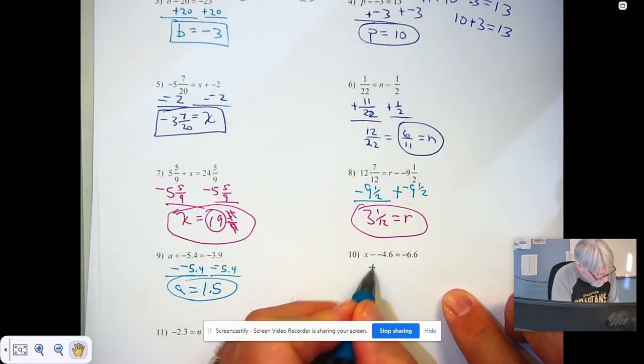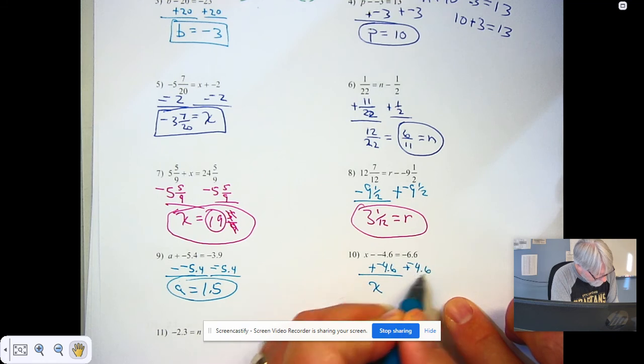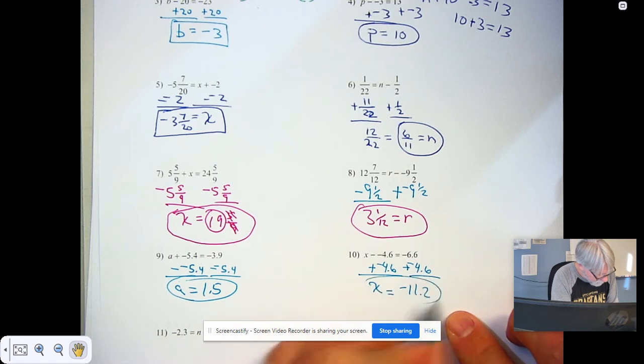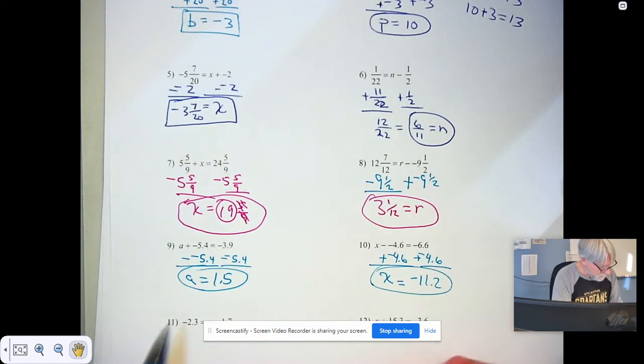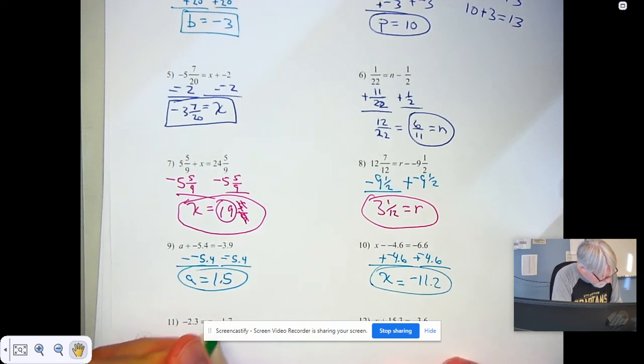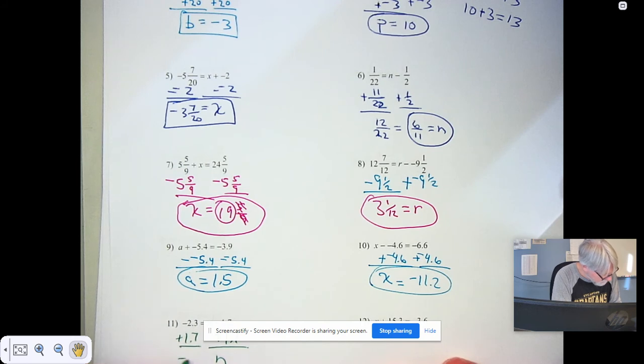Subtracting a negative, add a negative. So x, add a negative, and I get 11.2, negative 11.2. Use your calculator to do the calculating. Instead of subtracting 1.7, add 1.7, and then you get n and you get negative 0.6.